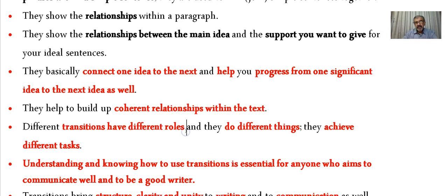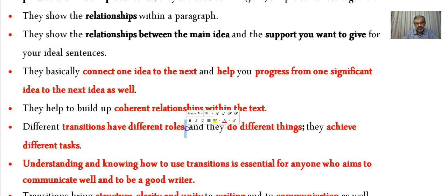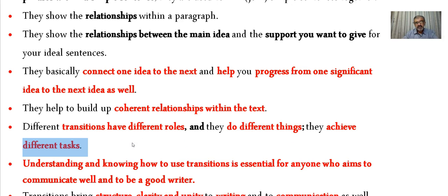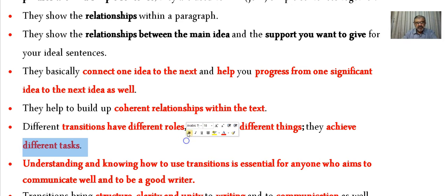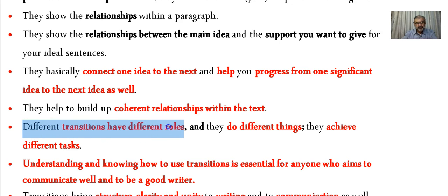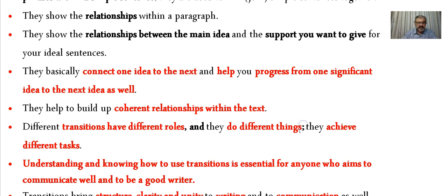Different transitions have different roles, functions, and they do different things. A semicolon, a punctuation mark, another punctuation mark, a link word — they achieve different tasks. One of the rules we will discuss is the addition function: adding one sentence to the next using the link word 'and', or a conjunction, then using punctuation marks to keep adding ideas together.